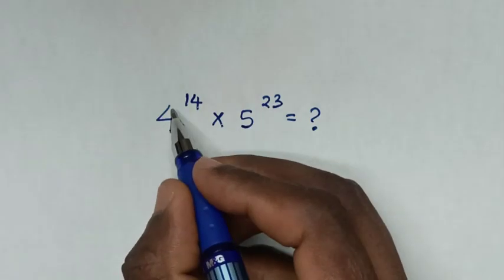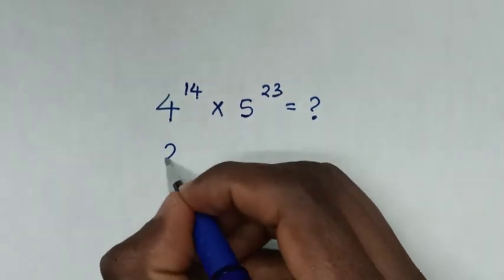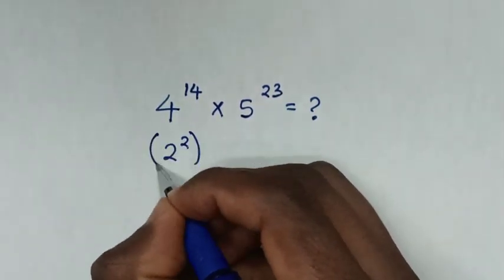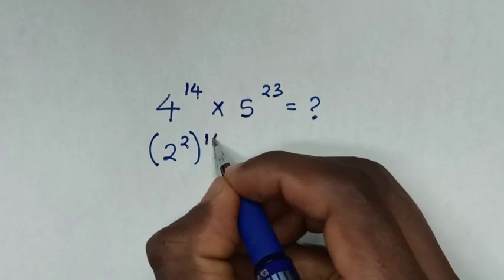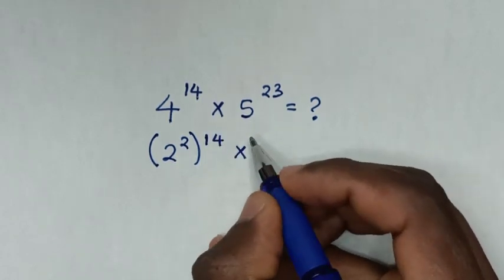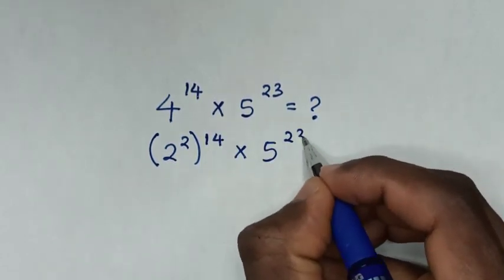So, from this exponent of 4, 4 is the same as 2 to the power of 2, in brackets, to the power of 14, then times 5 to the power of 23.